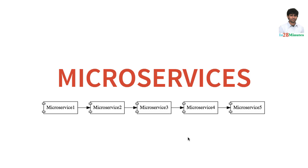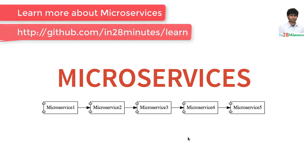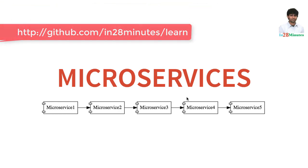In microservices architectures, the focus is on avoiding something like this. That's why we use the terminology 'thin pipes.' Basically, the infrastructure you'd use to connect applications should be as thin as possible and should not have any business logic at all. All the business logic should be inside the real applications and not inside the connecting pipe. That's another key difference between microservices and SOA architectures.